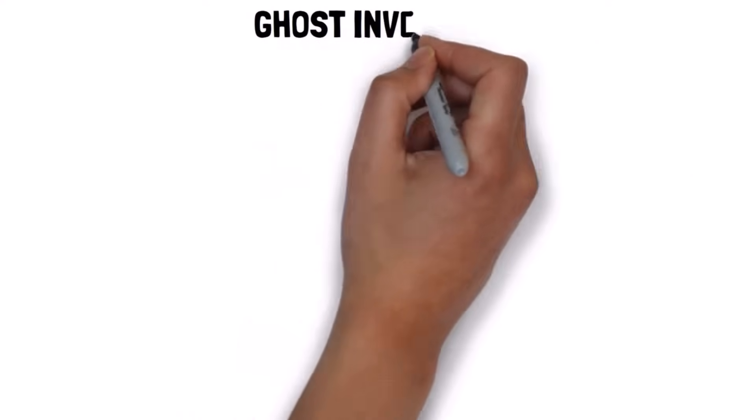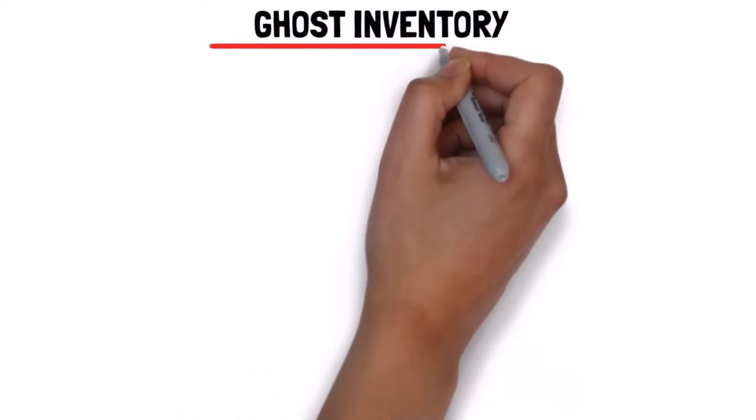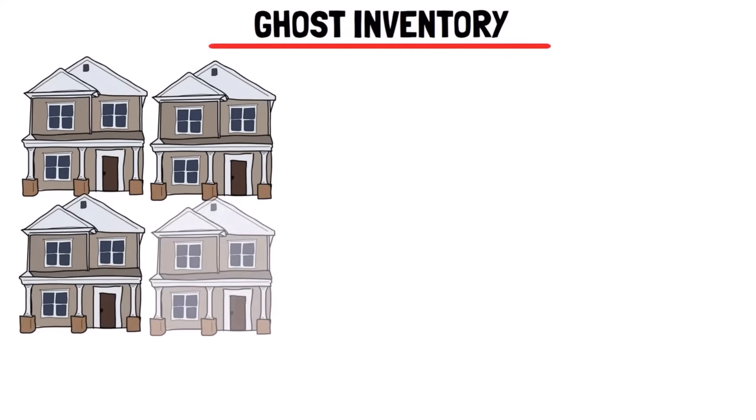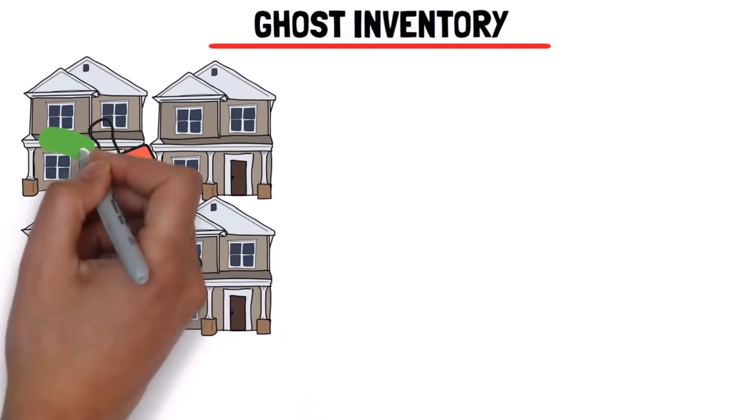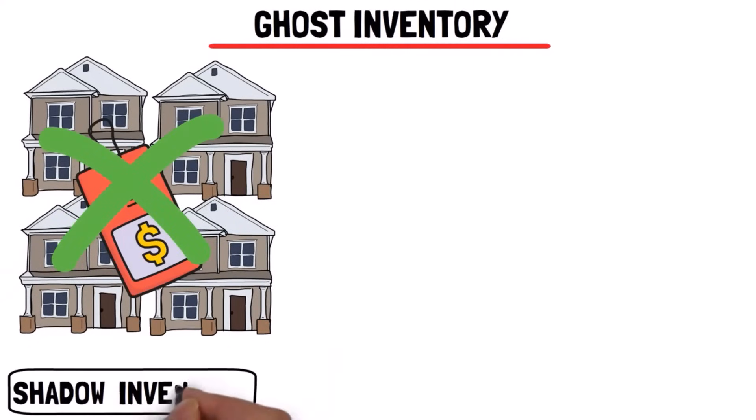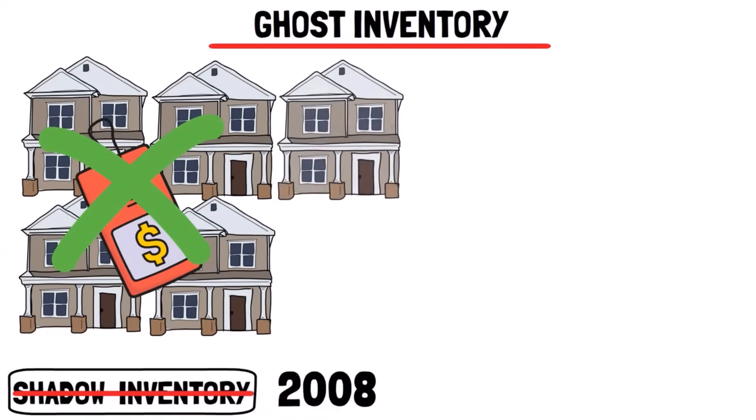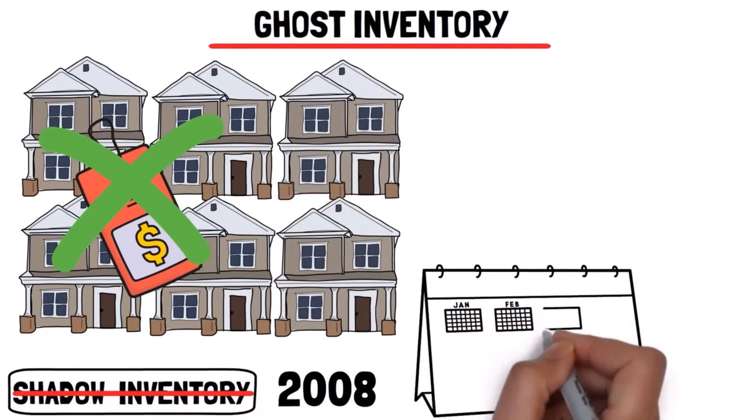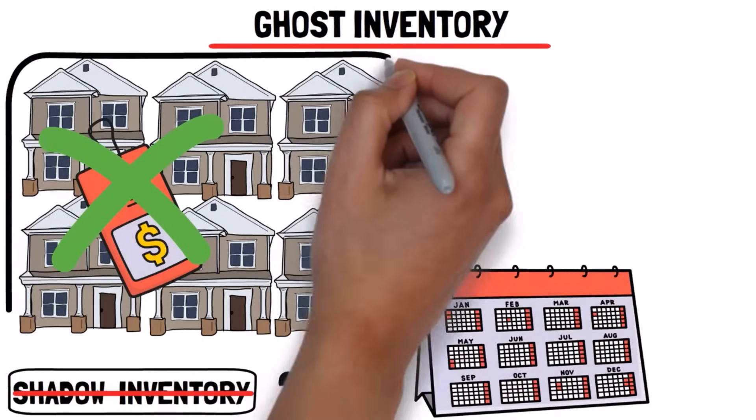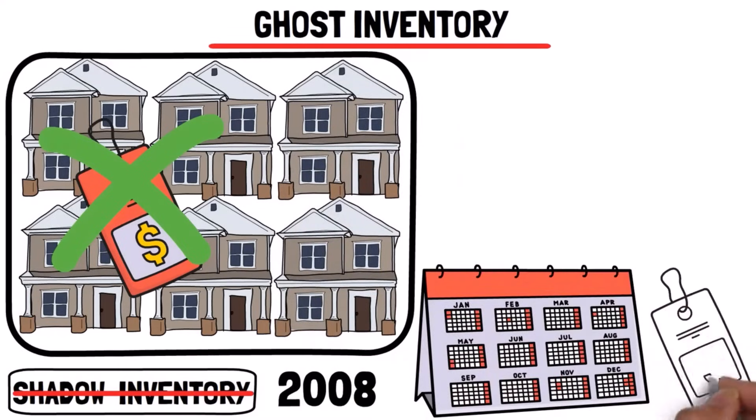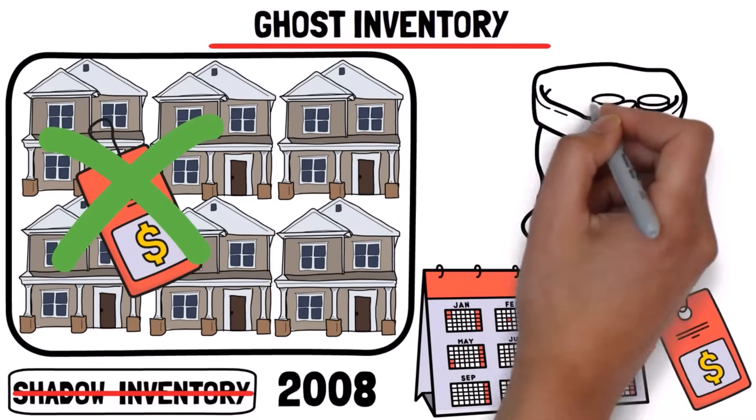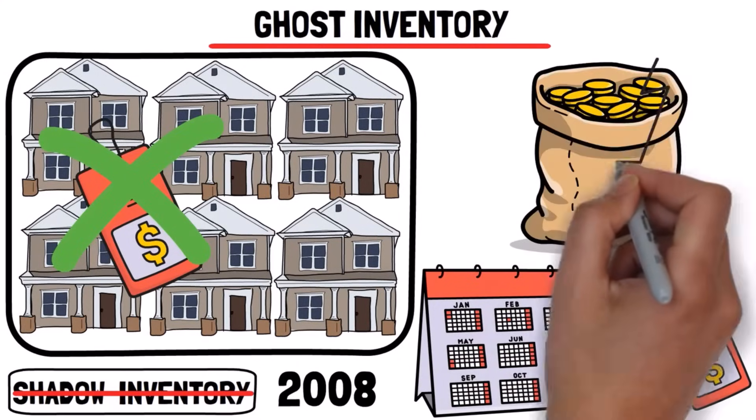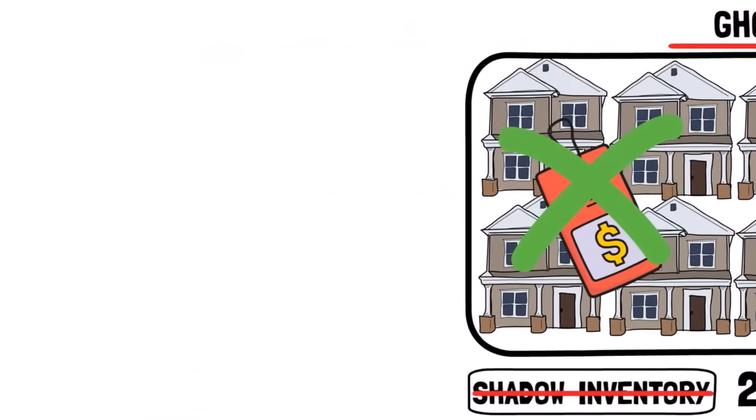Now, let's talk about the second issue, ghost inventory. There are too many homes that builders have built but haven't sold. This isn't like the shadow inventory from 2008. It's more like a massive surplus of homes that builders have created in the past three years. We're about to see all these homes flood the market. Builders didn't make affordable homes. They made expensive ones, which makes our affordability problem worse.